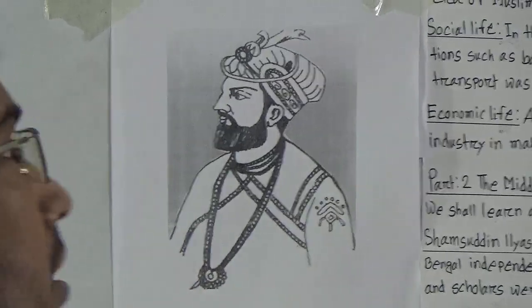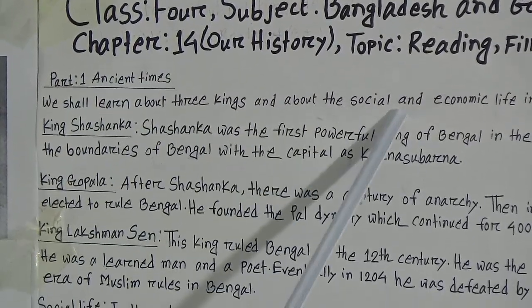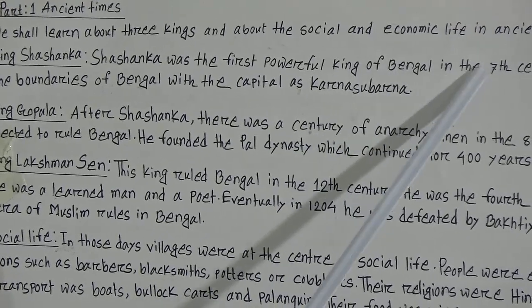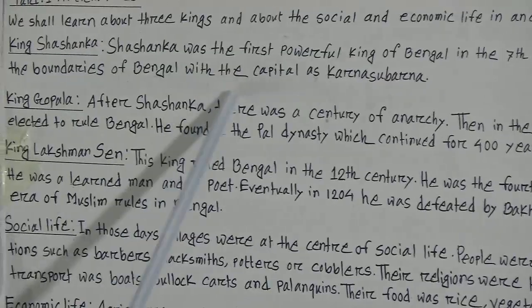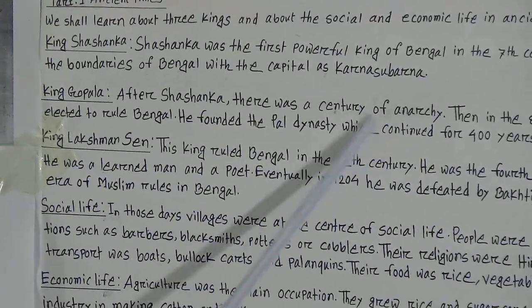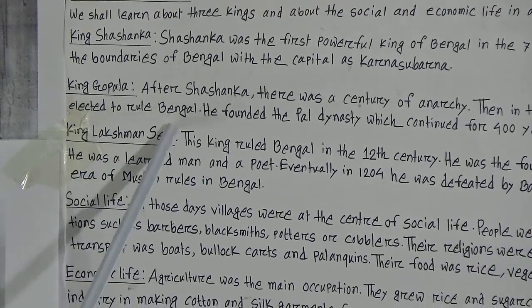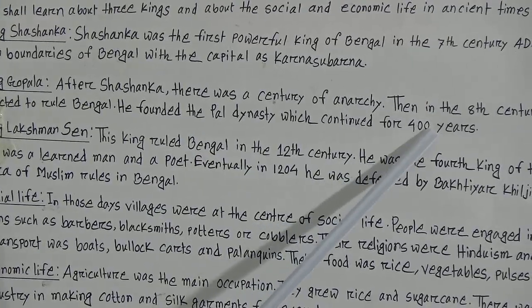Now we will go to the Reading. Part 1, ancient times. We shall learn about three kings and about the social and economic life in ancient times. King Shoshonko was the first powerful King of Bengal in the 7th century AD. He established the boundaries of Bengal with the capital at Karno Subarno. King Gopala: after Shoshonko there was a century of anarchy. Then in the 8th century, Gopala was elected to rule Bengal. He founded the Pala dynasty which continued for 400 years.